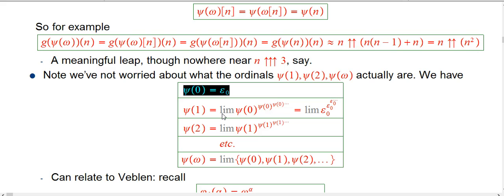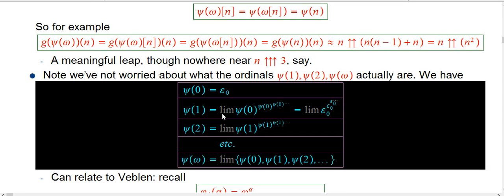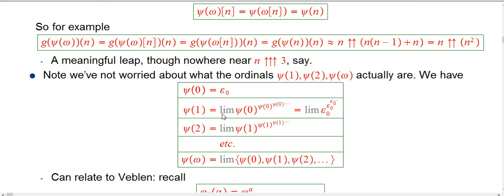We know psi of 0 is epsilon naught — a super famous ordinal. Psi of 1 is the limit of epsilon naught to itself to itself to itself — a double-up tower of epsilon naughts. Then psi of 2 is the limit of that tower, and psi of omega, the biggest one we have so far, is of course the limit of psi of 0, psi of 1, psi of 2, and so on. So this is just restating the stuff about fundamental sequences but focusing on the limit of the sequences rather than the nth term.